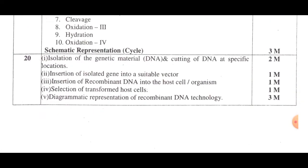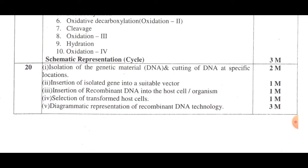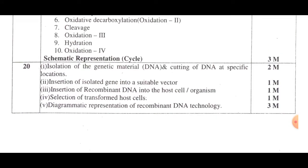Question 20 is about the process of recombinant DNA technology. The steps are: isolation of genetic material, cutting of DNA at specific locations, insertion of isolated gene into a suitable vector, insertion of recombinant DNA into host cells, and selection of transformed host cells — giving 5 marks. The diagrammatic representation of recombinant DNA technology is worth 3 marks.